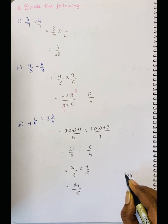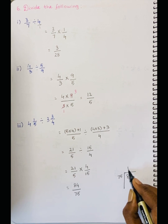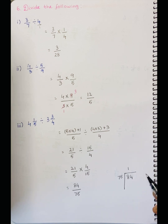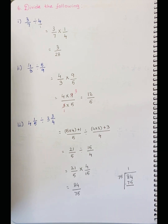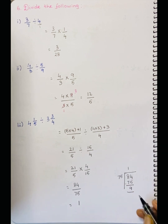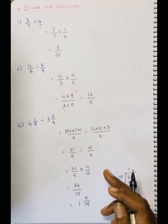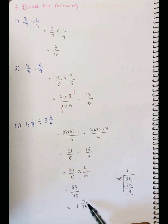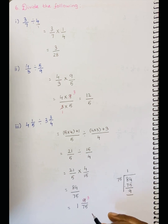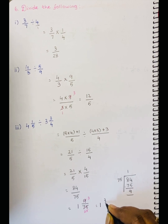So 84 divided by 75: 75 goes into 84 once. 84 minus 75 is 9. Count: 76, 77, 78, 79, 80, 81, 83, 84 — remainder 9. So the answer is 1 and 9 by 75. Simplify 9 by 75 by 3 tables: 3 times and 25 times. So the final answer is 1 and 3 by 25.